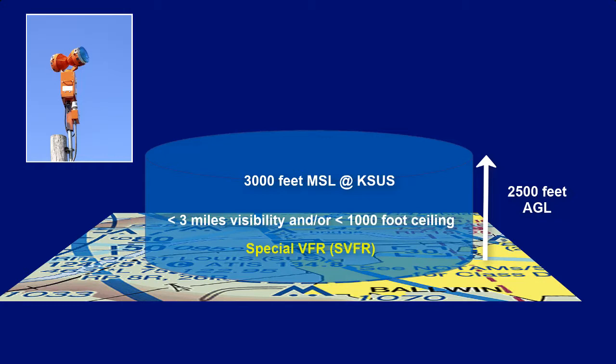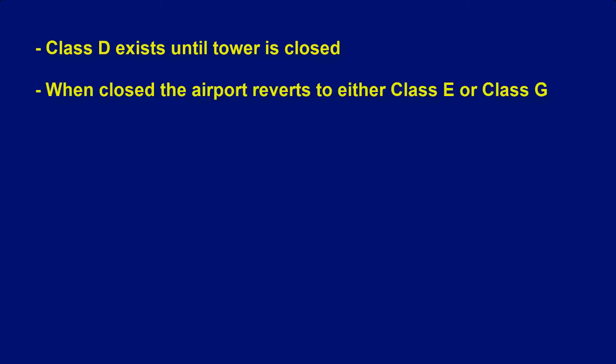You will need to request special VFR in such conditions — see that video for further details. Keep in mind that Class D only exists when the tower is in operation. When the tower is closed, the airport may revert to Class E or Class G airspace. See the Class E and Class G videos for further details.